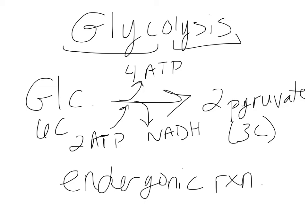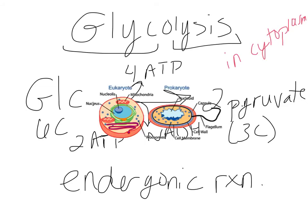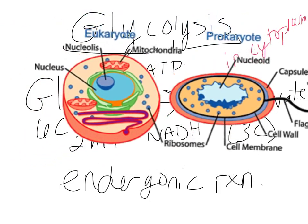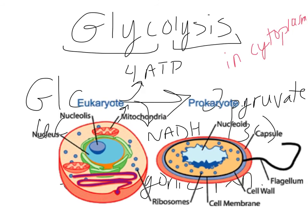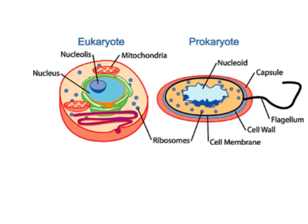Now we need to determine the fate of those pyruvates, which depends on the presence of oxygen. If oxygen is present, pyruvate will go through oxidation and become acetyl-CoA, which is able to enter the mitochondria and start the Krebs cycle. If there is no oxygen present, it doesn't go into the mitochondria and doesn't form acetyl-CoA.